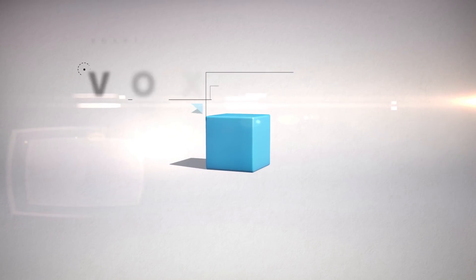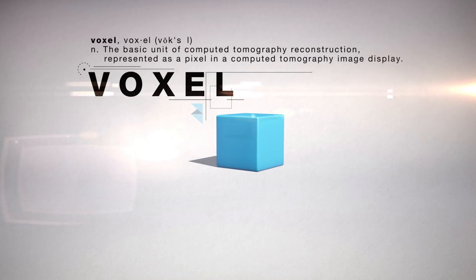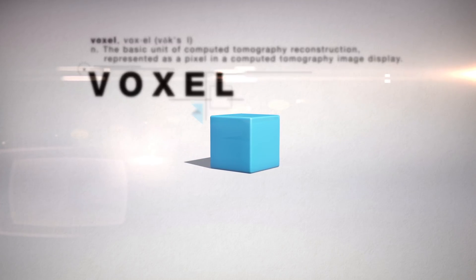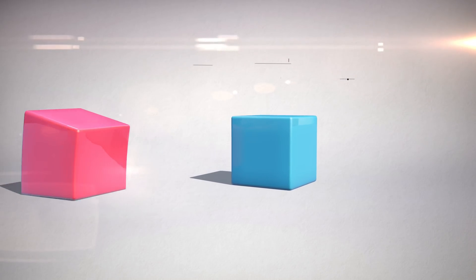If we were to take one of these pixels and extrude it in 3D, we would have a volumetric pixel, better known as the voxel. Voxels can have specific color properties similar to pixels, but also can be given specific material properties as they are tangible objects.